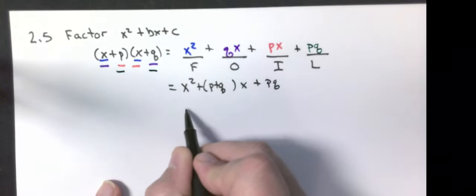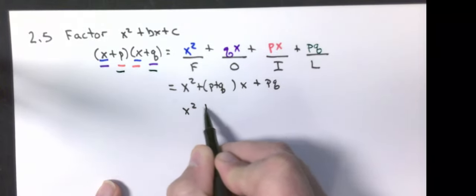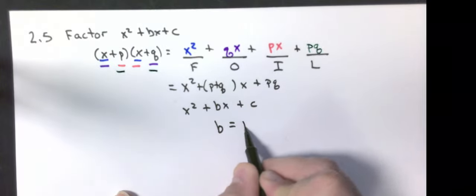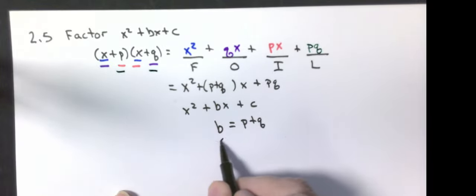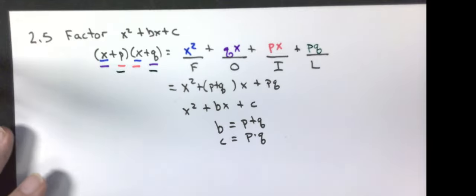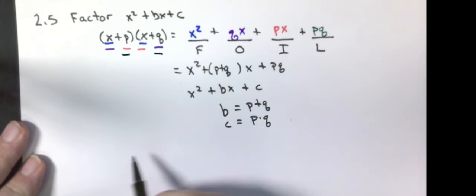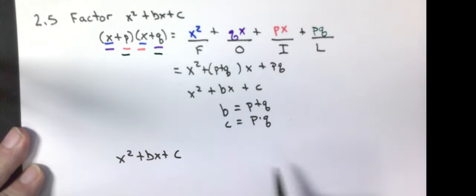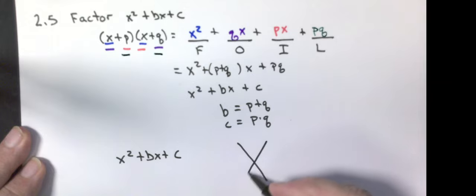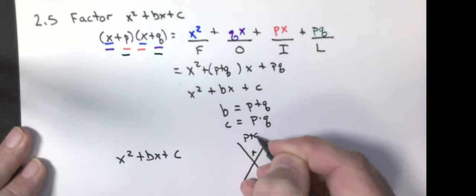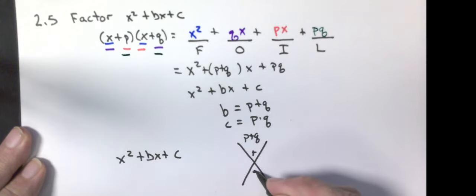This is our c term. This is x squared plus bx plus c, where b equals p plus q and c equals p times q. So in order for me to factor something that looks like this, I want to find two numbers that add to p plus q and that multiply to p times q. That's where the thought process comes in for us to be able to factor these things.